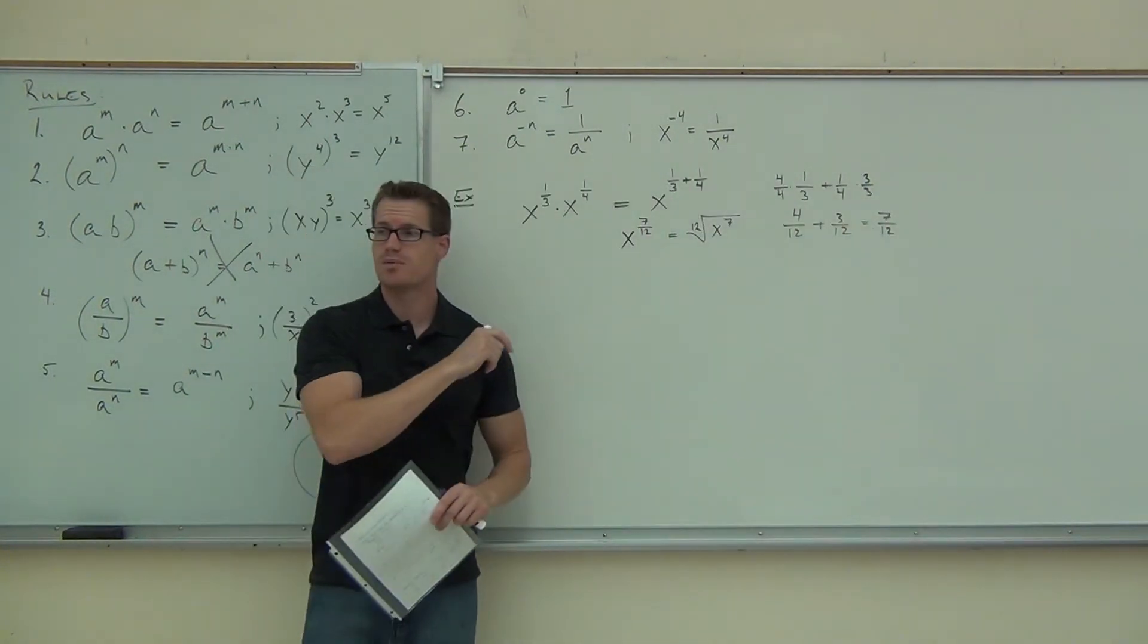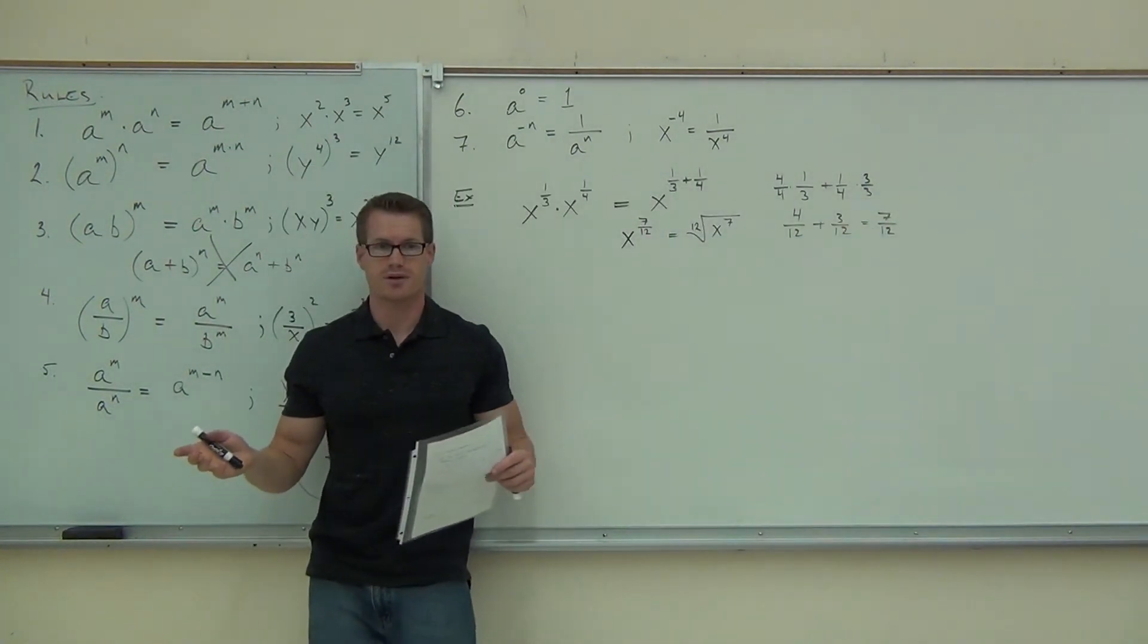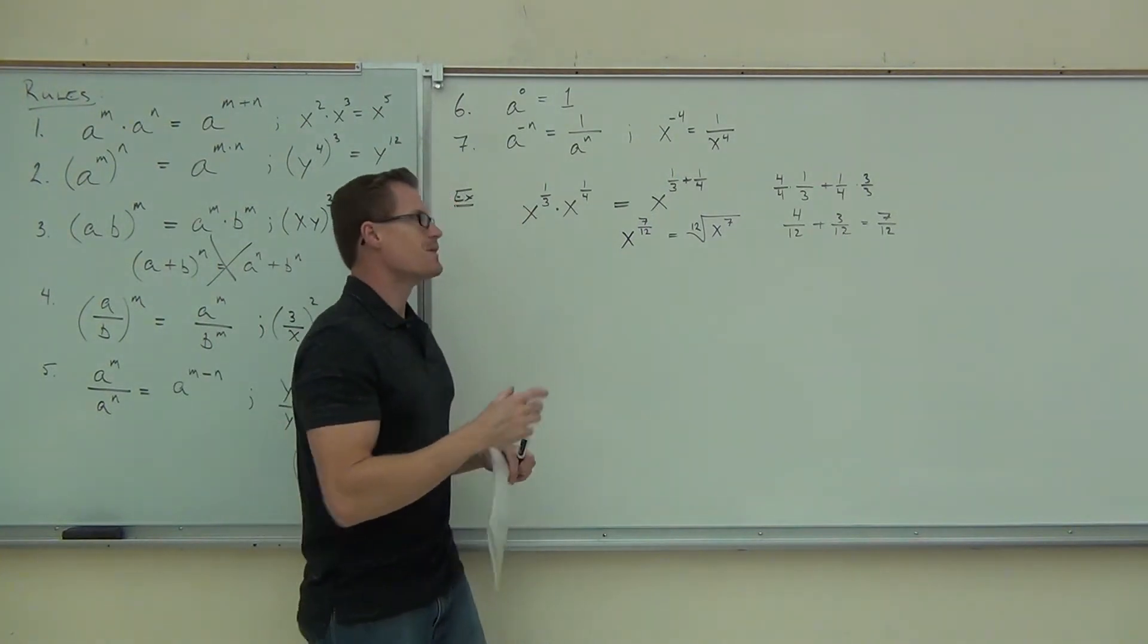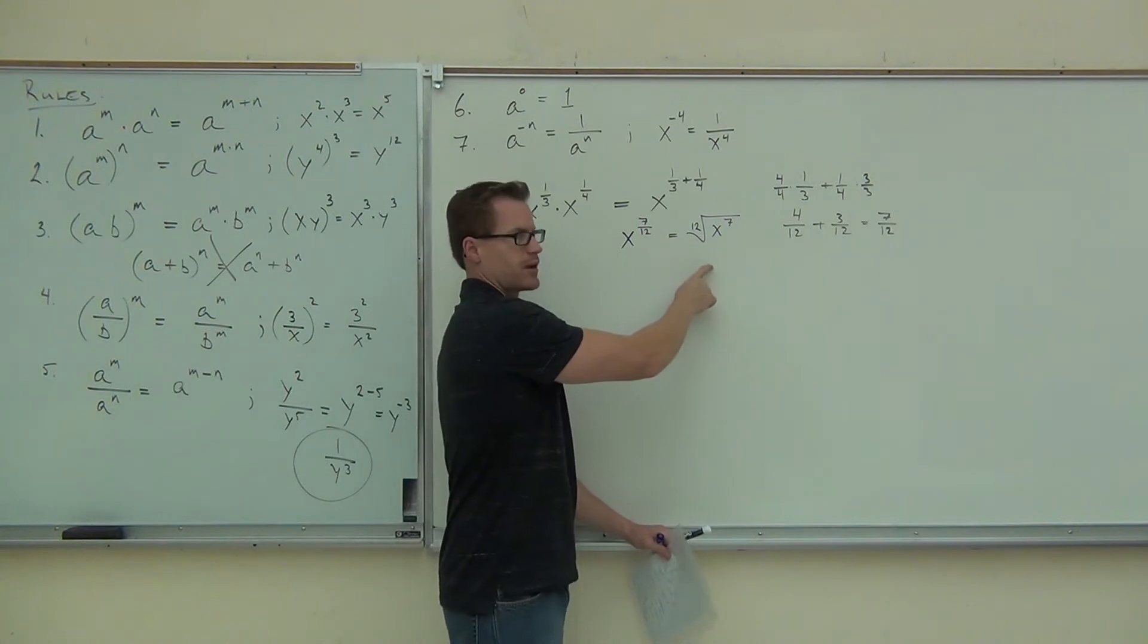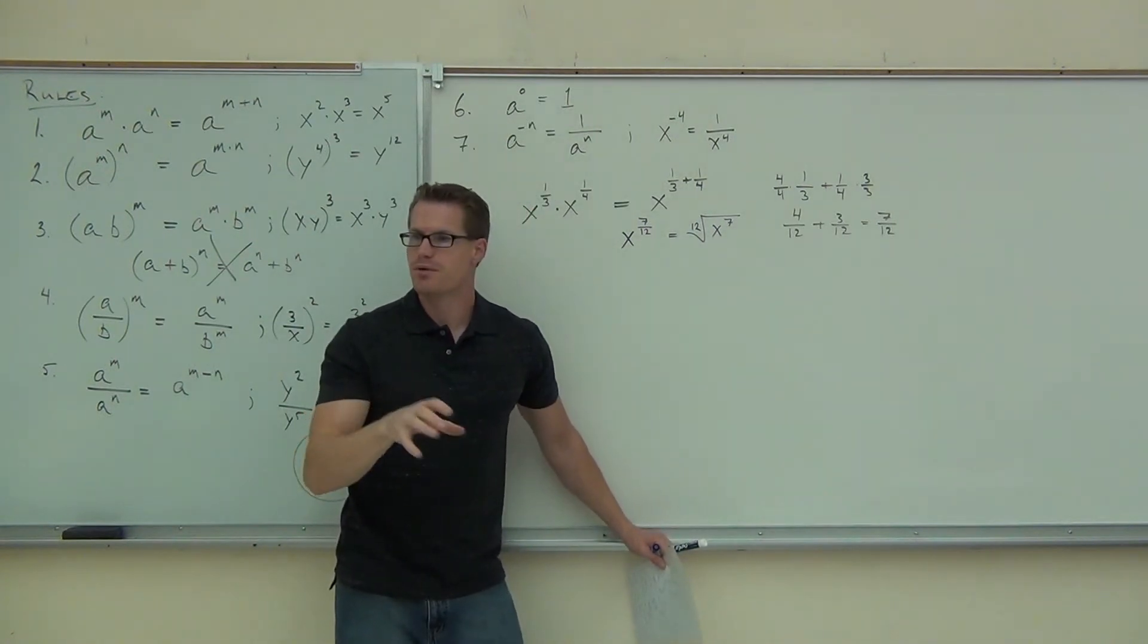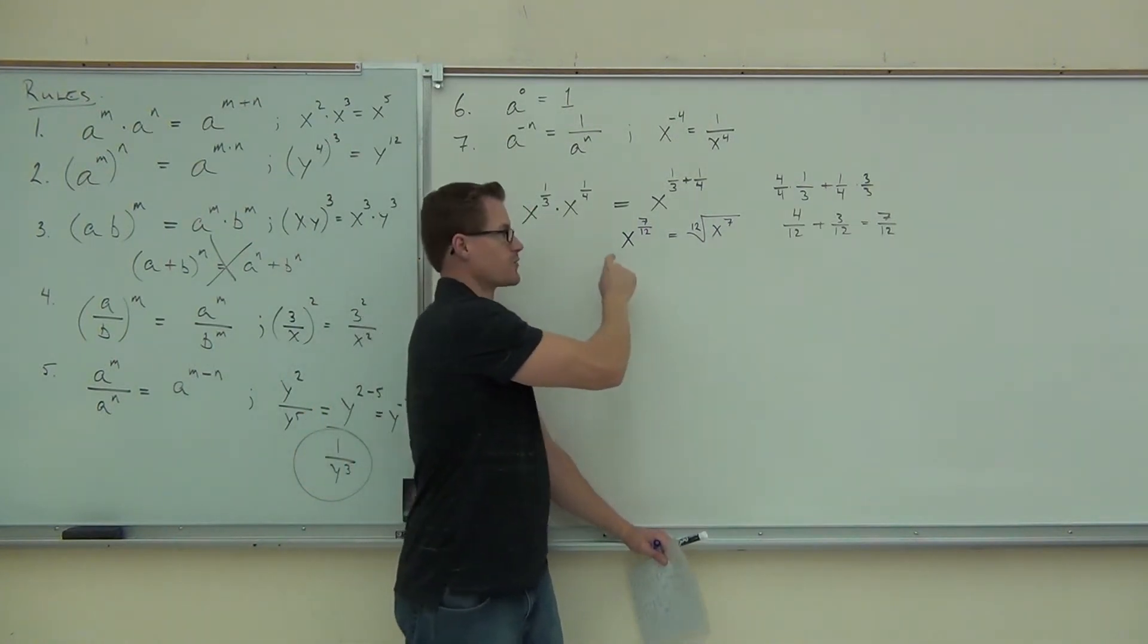All right, let's move on here. Before I do, are there any questions on that example? Because this is just our start-off point. Are you guys all right with that one? So the final answer is the square root? If it asks for the root, then yeah, that's the final answer. If it doesn't, you can definitely leave it x to the 7/12. What I'm trying to do is make you remember that this is possible.